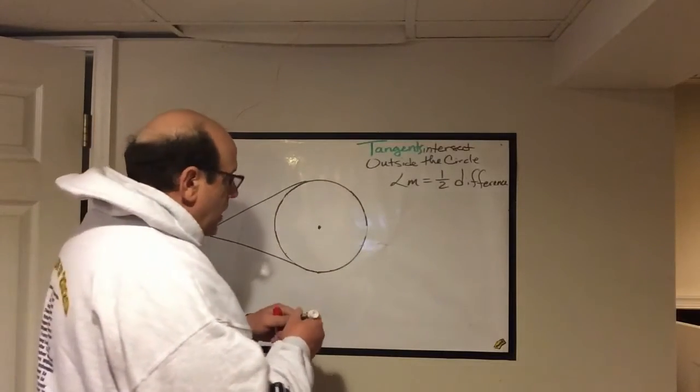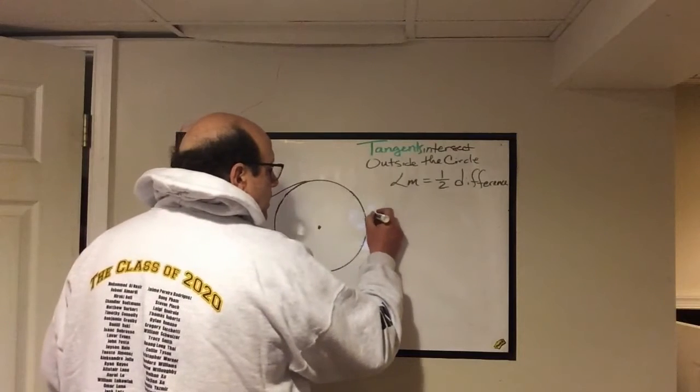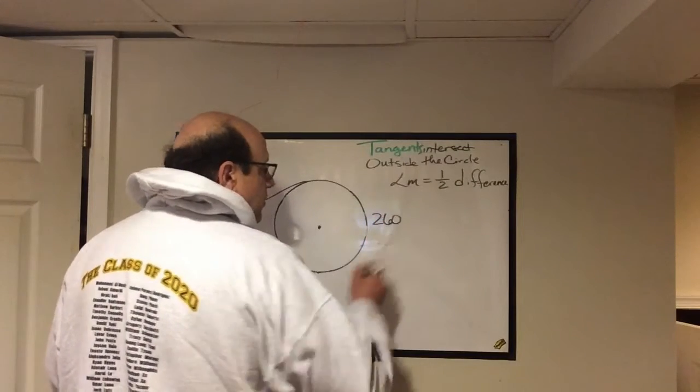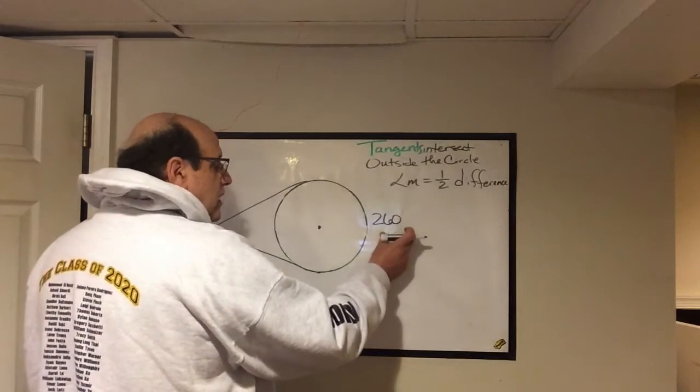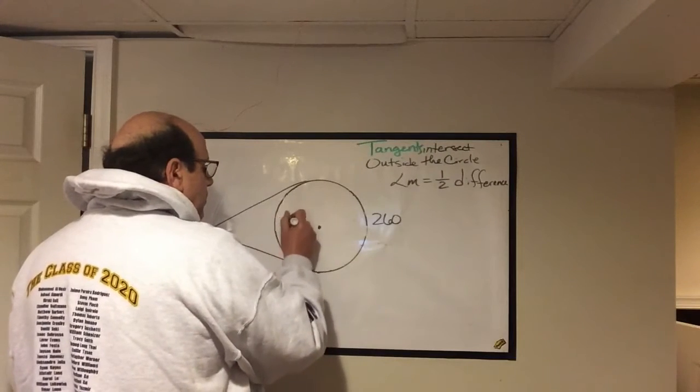Let's say they give you, let's make it real simple. Let's make this 260 out here. Well, if this is 260 out here, then this has to be 100.